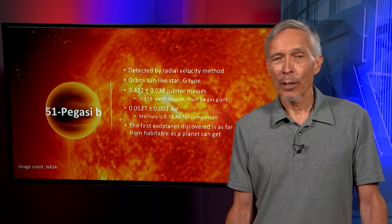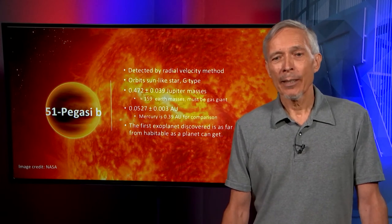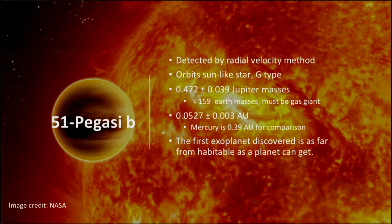We can go back to the prototype. The first exoplanet discovered, 51 Pegasi, was detected by the radial velocity method, and it orbits a Sun-like star. That's how it was found. It has about half Jupiter's mass, which is about 160 times the mass of the Earth.